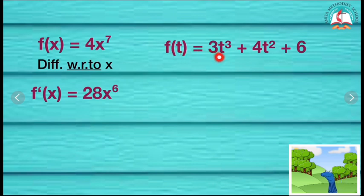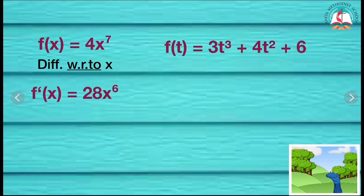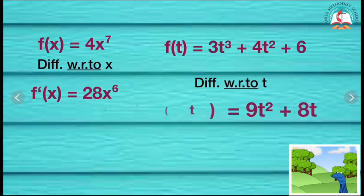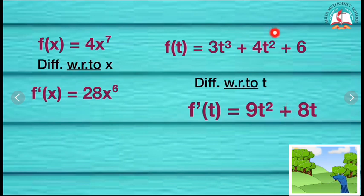f of t is equal to 3 into t power 3 plus 4t square plus 6. Here I have to differentiate with respect to t. Therefore f dash of t is equal to 3 times 3 is 9 into t square — I have to reduce the power by 1. Then plus 4 times 2 is 8 into t.